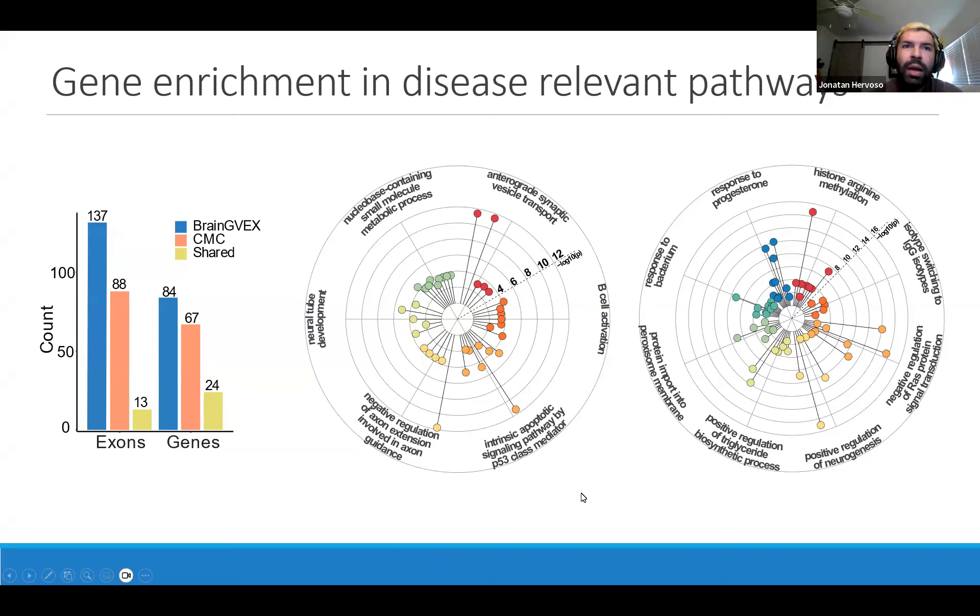This is relatively consistent with what the literature establishes the pathways and hallmarks of schizophrenia are. It's especially interesting to see immunological terms come up as it's been recent in the development of understanding these neuropsychiatric diseases that immunological responses could be largely responsible.